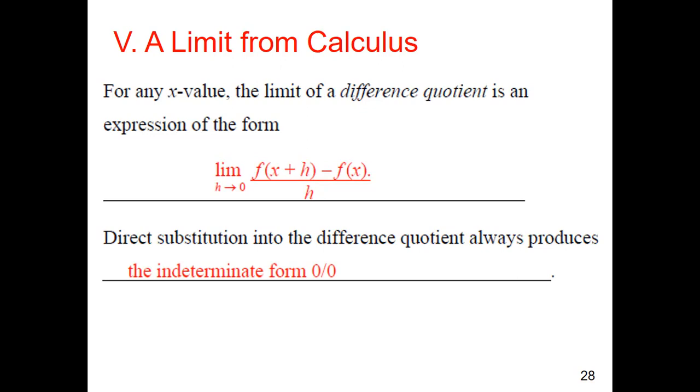If you use direct substitution into the difference quotient, it's always going to be an indeterminate form. Meaning that in order to find this, we have to go through and simplify. Otherwise, I plugged everything in, I'm done. No. We're going to end up as an indeterminate form and therefore defeats the purpose of what we're doing.